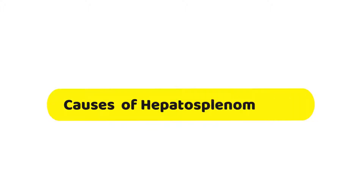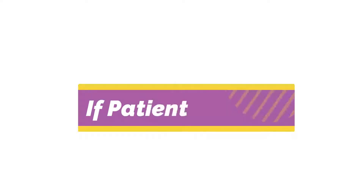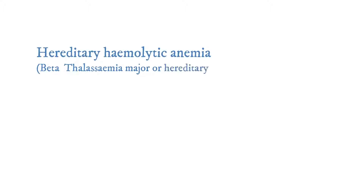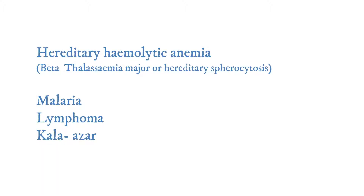Causes of hepatosplenomegaly. If the patient is young, then causes of hepatosplenomegaly may be hereditary hemolytic anemia, like beta-thalassemia major or hereditary spherocytosis.